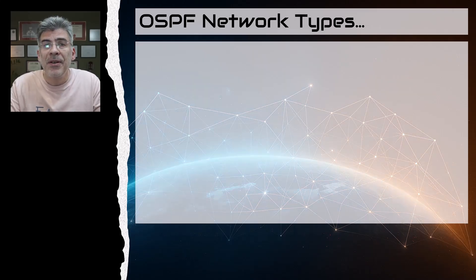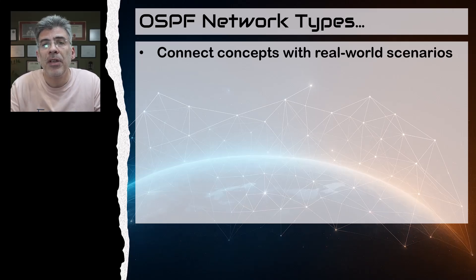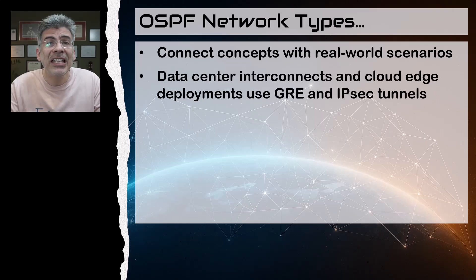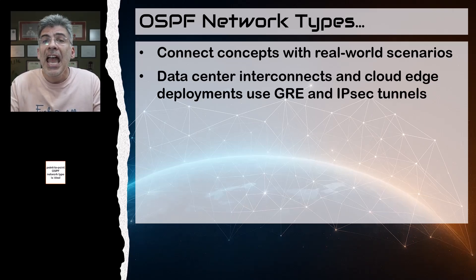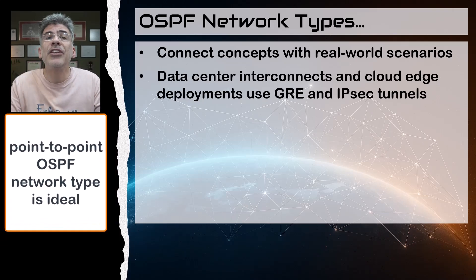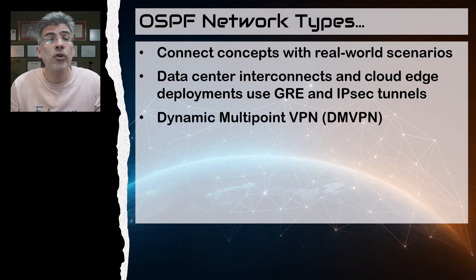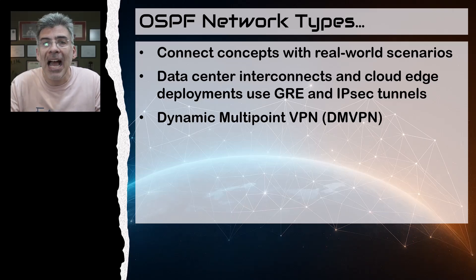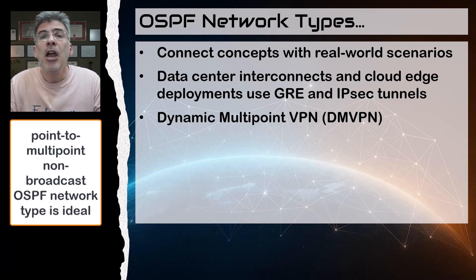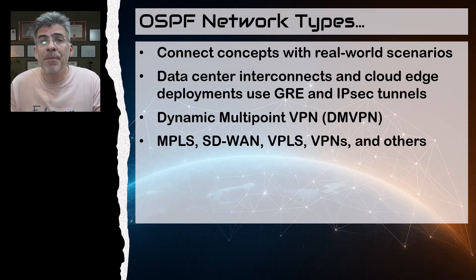A final word on network types: it's always important to connect these concepts with real-world scenarios. OSPF network types are very relevant to modern networks. In data center interconnects and cloud edge deployments, GRE and IPsec tunnels are still widely used to build secure point-to-point links, and OSPF configured with a point-to-point network type ensures stable and efficient routing without unnecessary DR/BDR election overhead. In DMVPN deployments, where spoke routers dynamically form tunnels with a hub and potentially other spokes, the point-to-multipoint non-broadcast type is ideal, especially when multicast isn't supported.